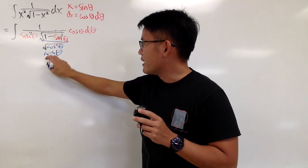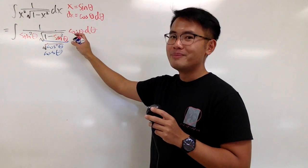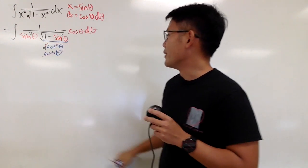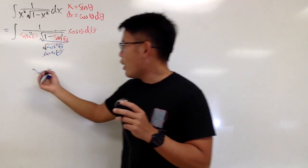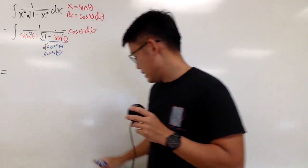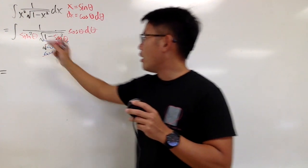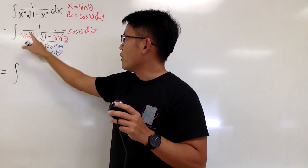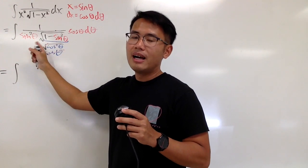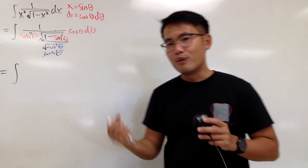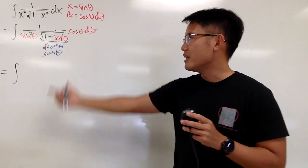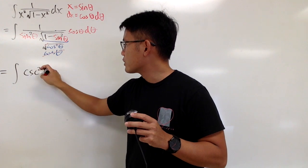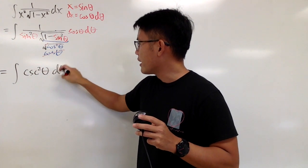This cosine theta in the denominator cancels with the cosine theta from dx in the numerator. So all in all, we have the integral of 1 over sine squared theta. Since 1 over sine is cosecant, we have the integral of cosecant squared theta d theta.